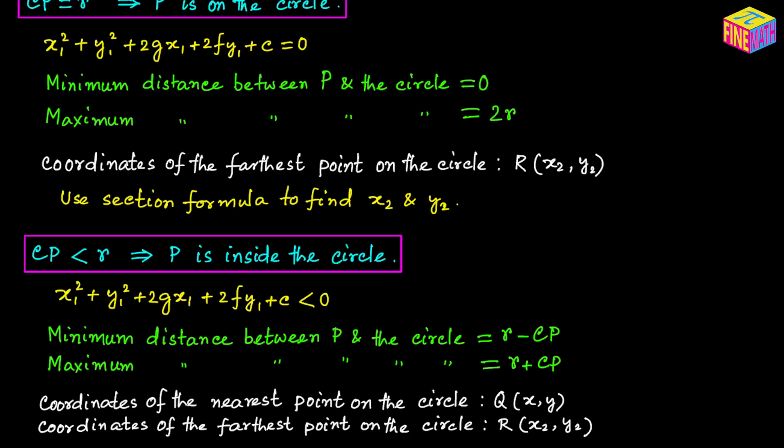Similarly, using the section formula we can calculate the coordinates of the farthest point on the circle, point R, with coordinates (x₂, y₂). Since we know CP, the coordinates of P, and the coordinates of center C, the internal section formula gives us x₂ and y₂.